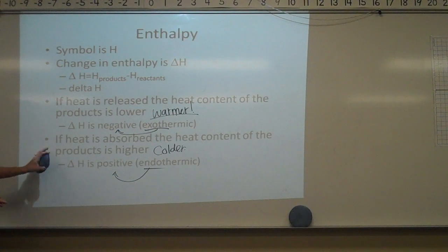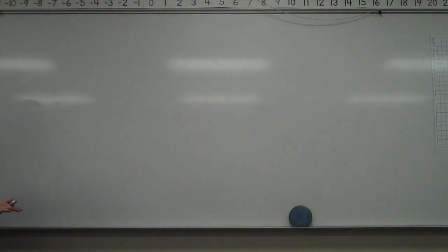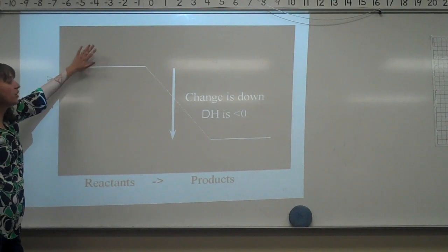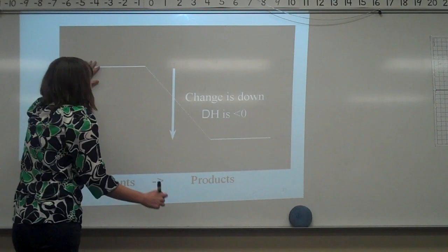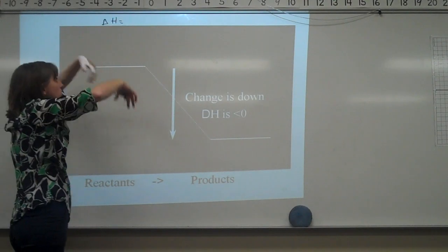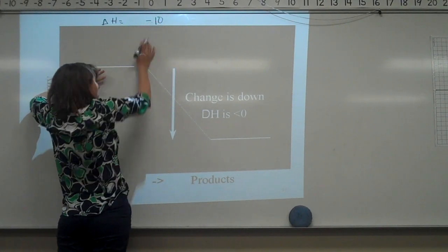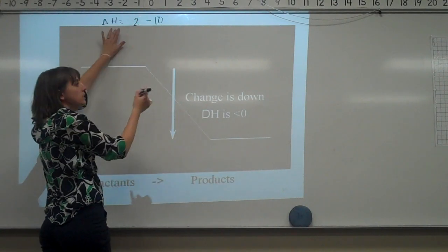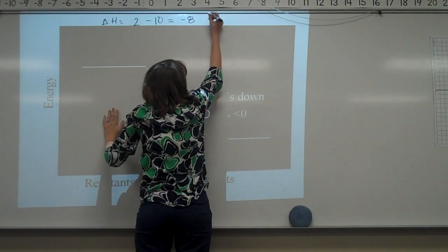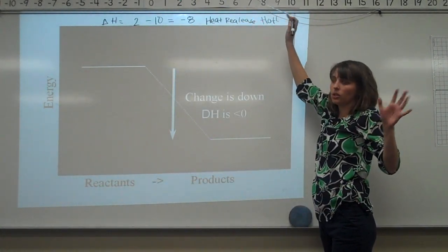So here we have our energy diagram with reactants and products. If our reactants have higher energy — say 10 — and we subtract our products, which are lower — say 2 — then delta H equals negative 8. If reactants are higher than products, heat is being released, so it's exothermic. Exo means out, endo means in — exo is like exit.